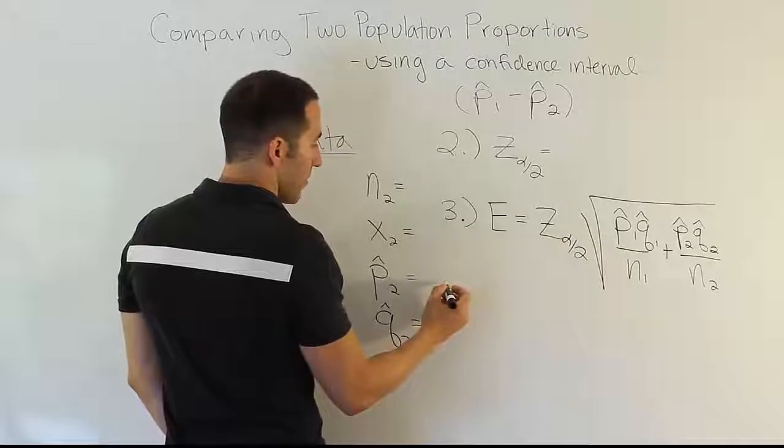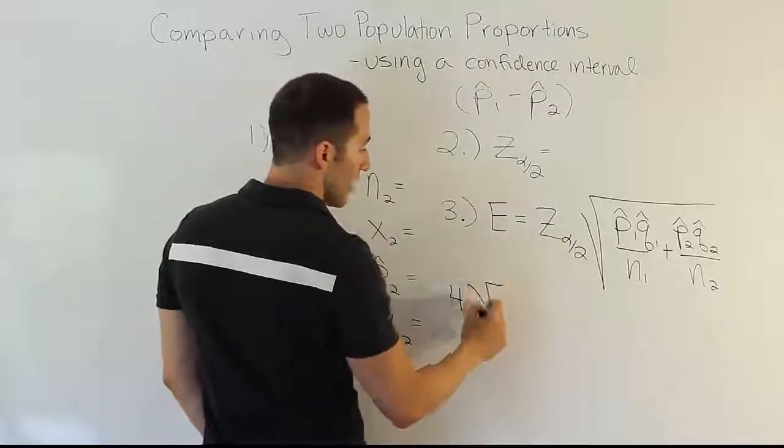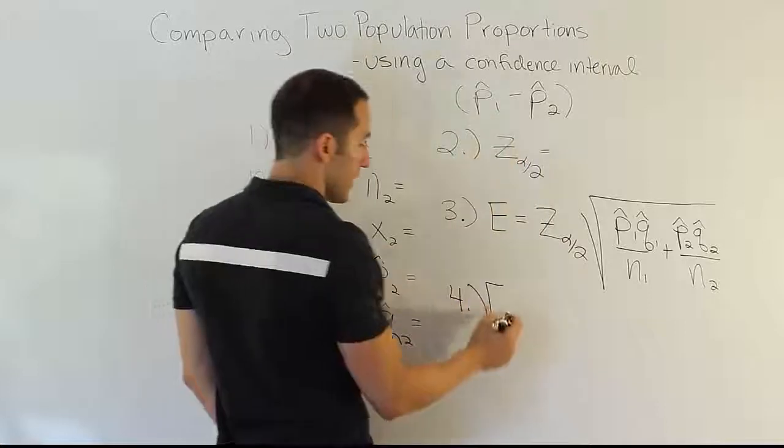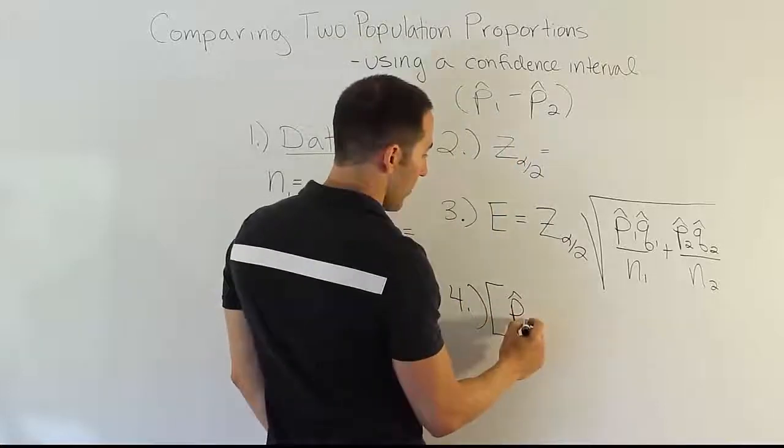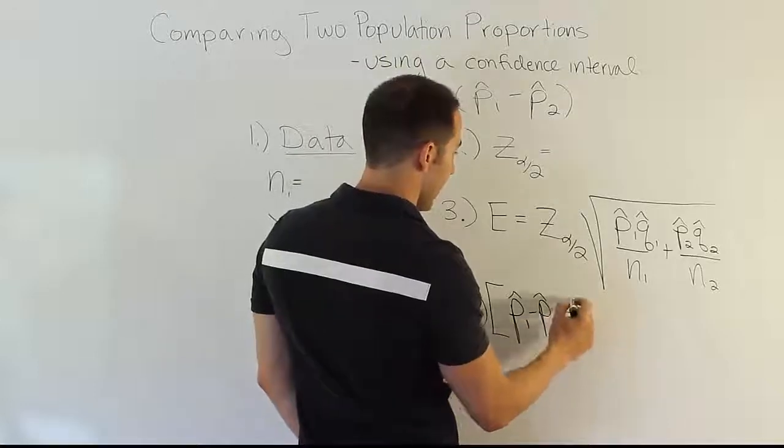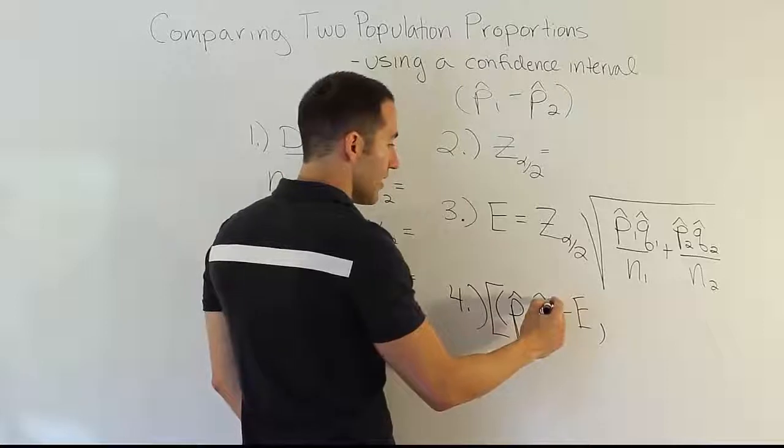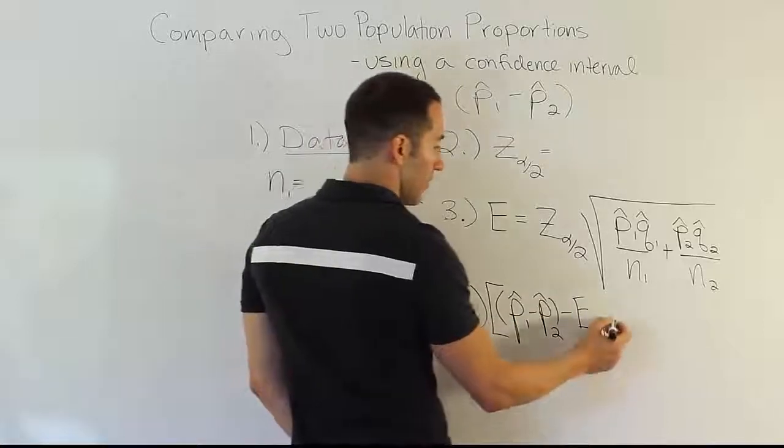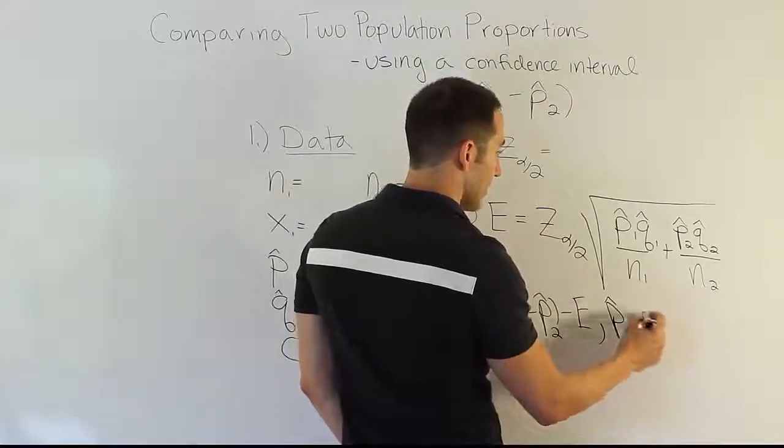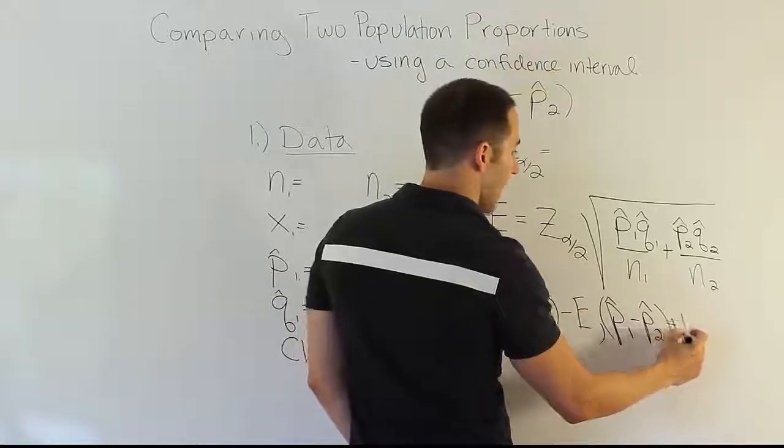And then, finally, in step 4, once we've calculated that margin of error, we do the easiest step of the process, which is simply to go ahead and fill in the point estimator, p-hat 1 minus p-hat 2 minus the error. And then, we'll do the same thing on the other side. However, we'll add the error.